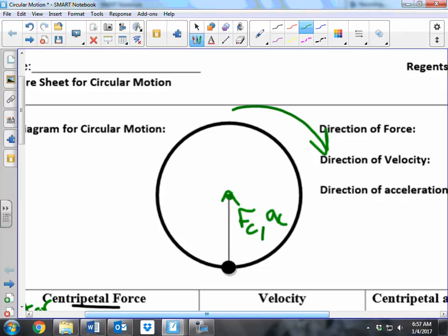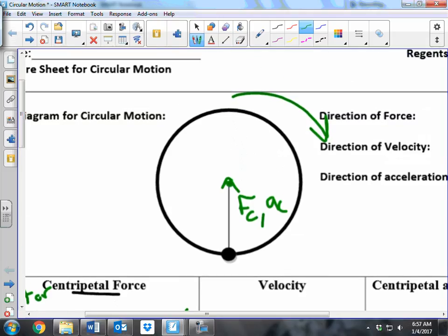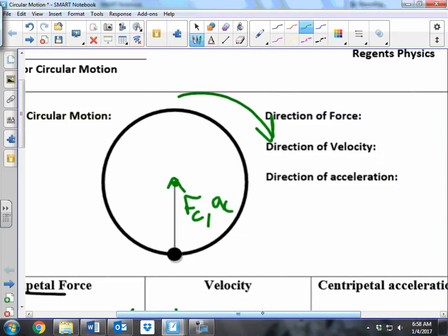Centripetal acceleration is always pointing towards the center. So whenever the stopper or wherever the stopper is on the circle, and if they said, what's the direction? It's always pointed to the center. So in this case, the center, the direction of the force would be north or up because that's where we're analyzing the stopper.